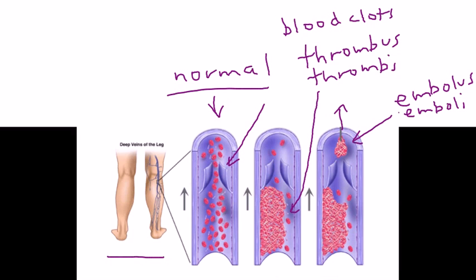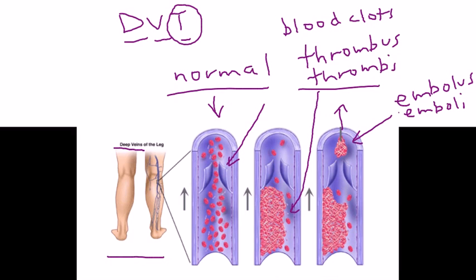The second scenario is DVT — deep venous thrombosis — because it's in the deep veins of the legs. The third scenario is when you get a PE, pulmonary embolism, meaning the emboli travel all the way to the lungs. That's a major problem because it can block vital oxygen exchange and lead to death, which is why DVTs are taken very seriously.